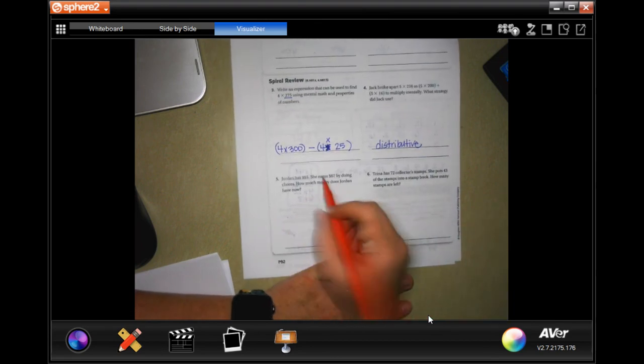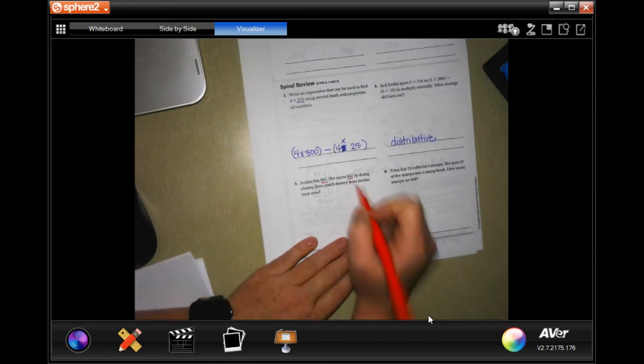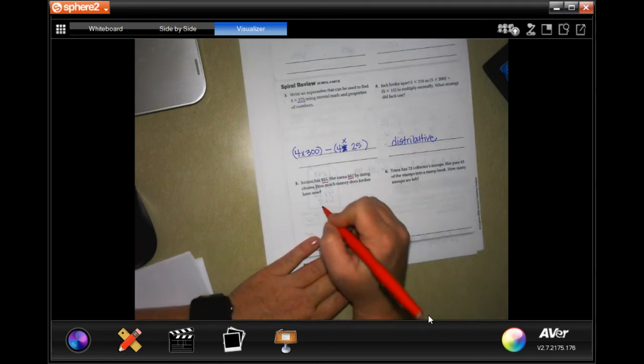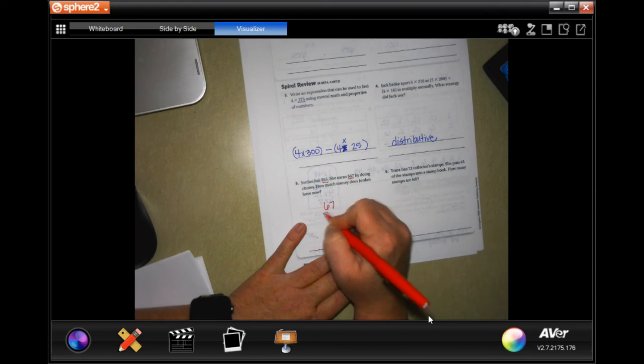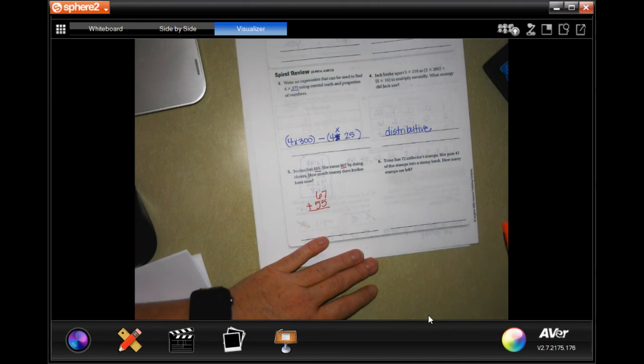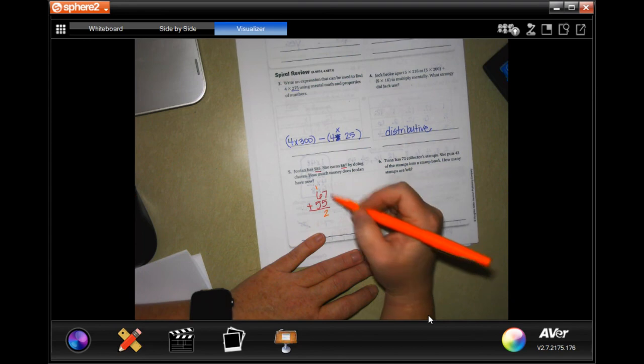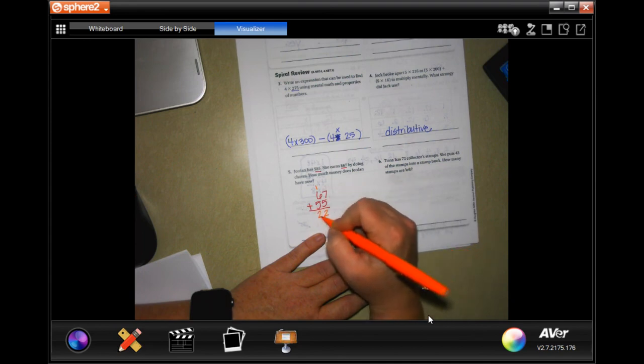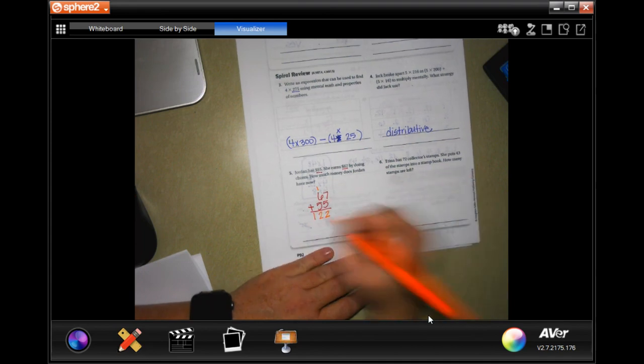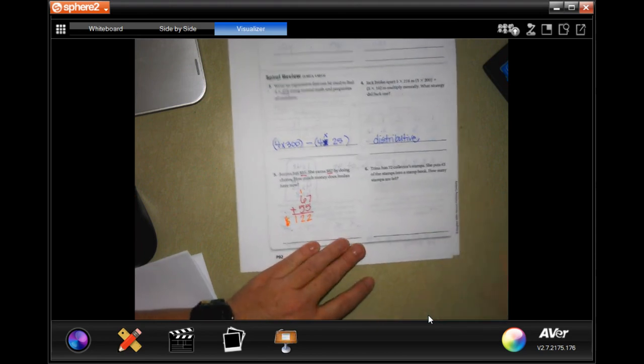All right. Jordan has $55. She earned $67 by doing chores. How much money does Jordan have now? All you got to do is add up those two numbers. Seven plus five is 12. Carry the one. One plus six is seven. Plus five is 12 again. Don't forget to put your dollar sign. That's your label. That's your word label.